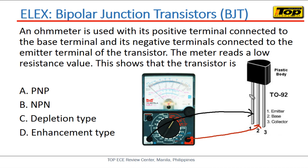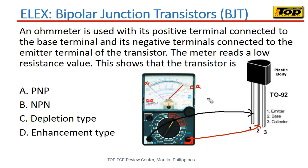We don't yet know if this transistor is NPN or PNP. But using the ohmmeter, the problem says the meter reads a low resistance value. A low resistance reading means the pointer deflects significantly — somewhere toward the low resistance end. If it didn't deflect at all, that would be infinite resistance. A low resistance value means current is flowing through the junction, which indicates forward bias.